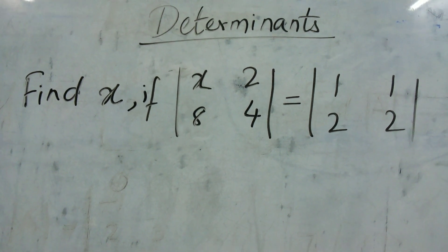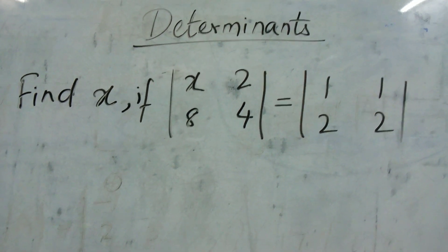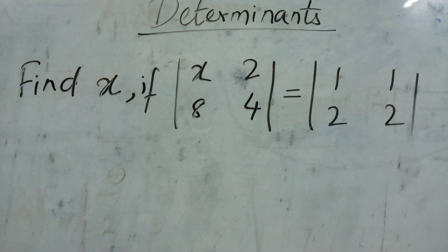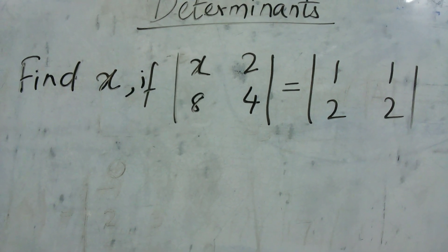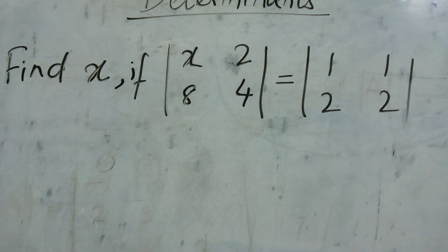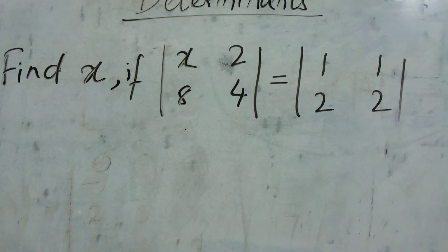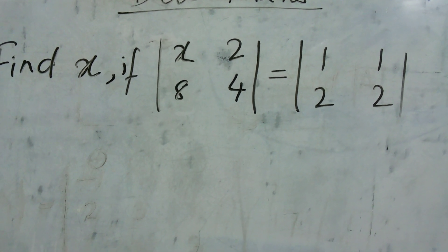So here it is given to find the value of x when the determinant with elements x, 2, 8, 4 is equal to the determinant with elements 1, 1, 2, 2.